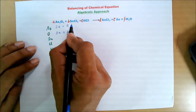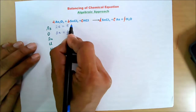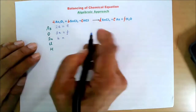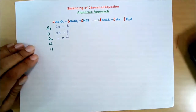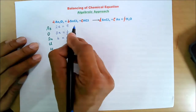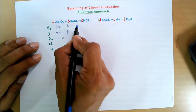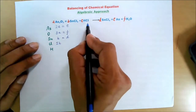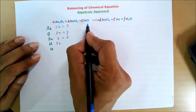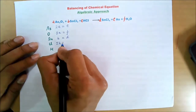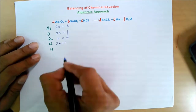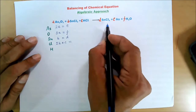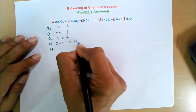For tin: a single atom of tin is present in stannous chloride, so I write B = D. That is my third equation. For chlorine: I have two chlorine atoms in stannous chloride, so I write 2B. Then in hydrochloric acid there is one atom of chlorine, so plus C. On the right-hand side, four atoms of chlorine are present in stannic chloride, so I write 4D. Equation: 2B + C = 4D.